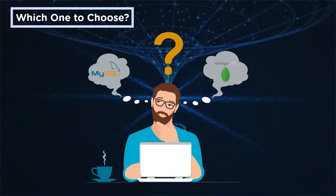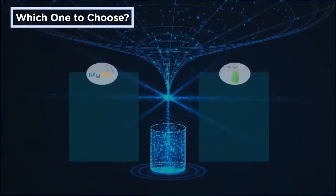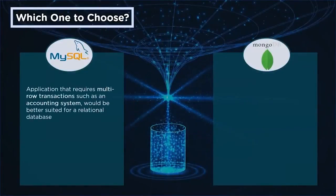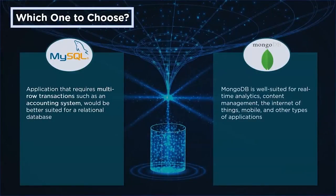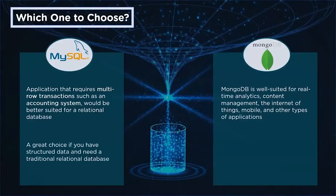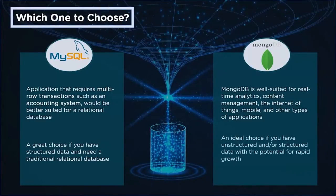So which one should you choose? If your application requires multi-row transactions, like an accounting system, a relational database is more ideal. MongoDB is more suitable for real-time analytics, content management, Internet of Things, mobile applications, and so on. MySQL is a great choice if you have structured data and need a traditional relational database, while MongoDB is ideal for unstructured data. Let us know in the comments which DBMS you prefer and why.